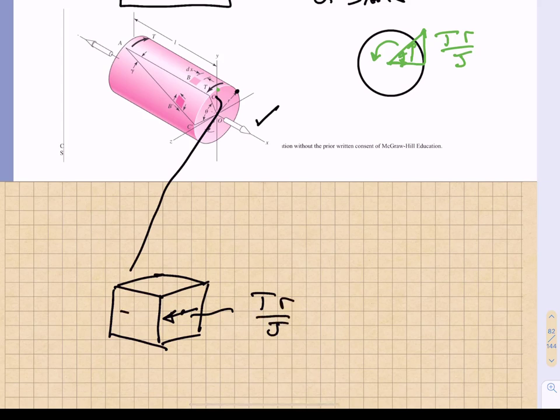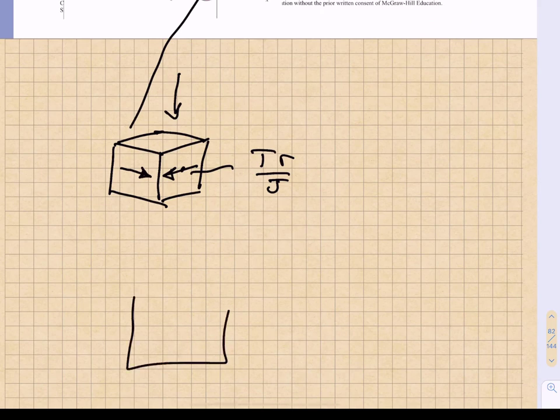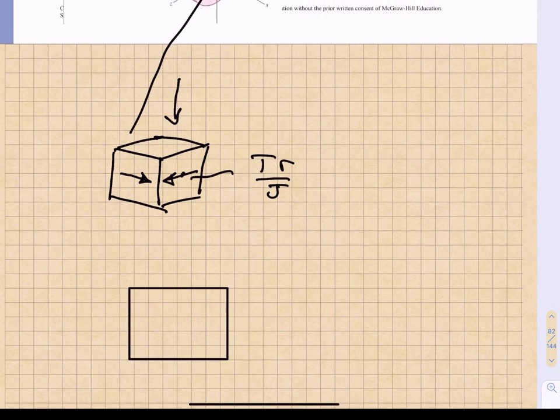And in order to keep that in equilibrium, we would need a shear stress in this direction. So if we were to look down on that particular element, we would find that by looking down on it, we would have a shear stress like so.